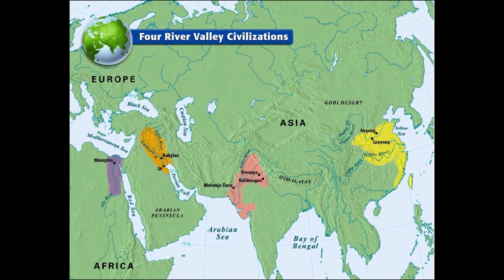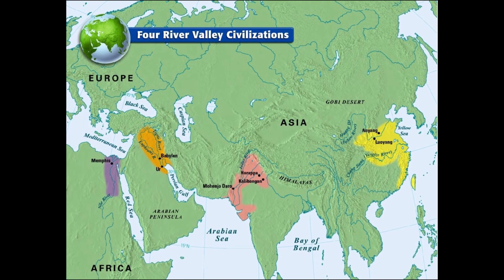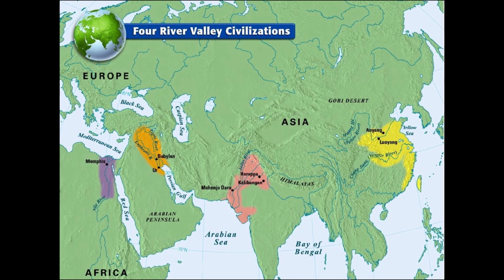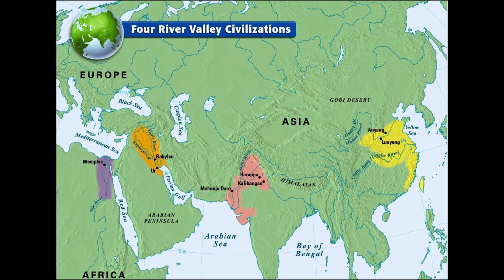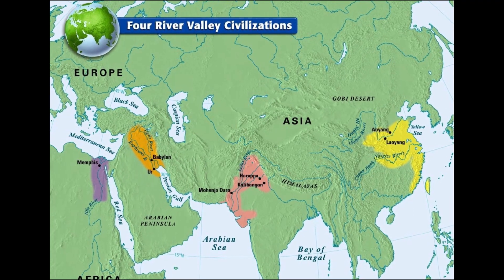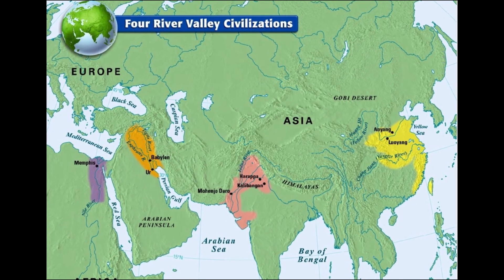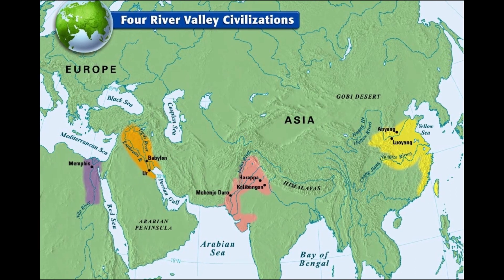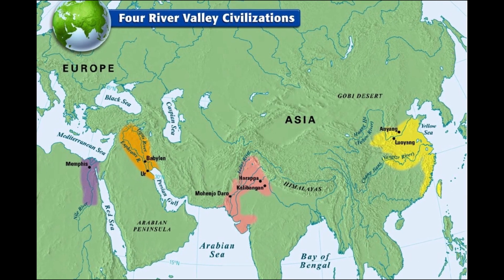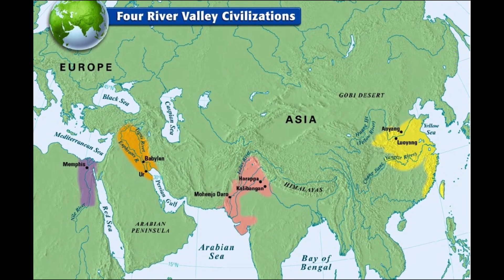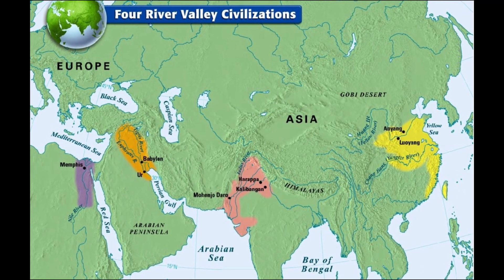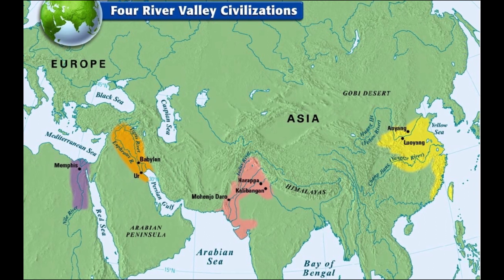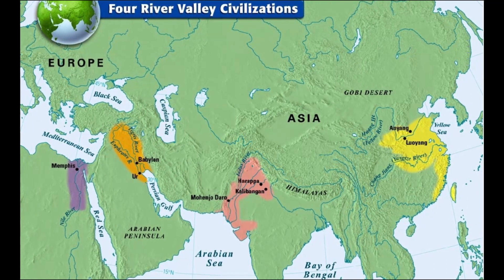Historically, civilization was centered around warm tropics and subtropics. The first five civilizations — Sumer, Nile Valley, Indus Valley, Yellow River Valley, and Norte Chico — were all in the subtropics.